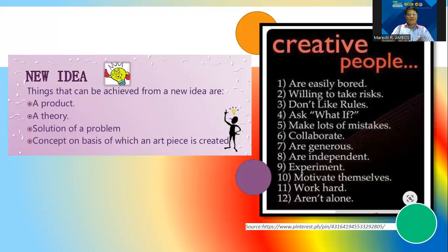Let's check the characteristics of creative people. Creative people are easily bored, willing to take risks, don't like rules, ask 'what if,' make lots of mistakes, collaborate, are generous, and like to experiment. They motivate themselves, are hardworking, and are independent. These are the characteristics of creative people.